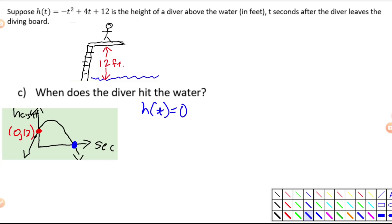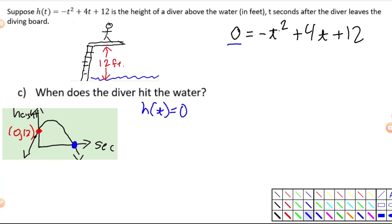Remember, you can think of that as your y-value. When do we hit the water? Well, we're going to substitute into this equation and get: zero is equal to negative t squared plus 4t plus 12. This tells us when the height equals zero — that's when the diver hits the water. So we just need to solve this equation, and that should give us two times — it will give us some negative value on the other side too. Let's go ahead and solve this now.